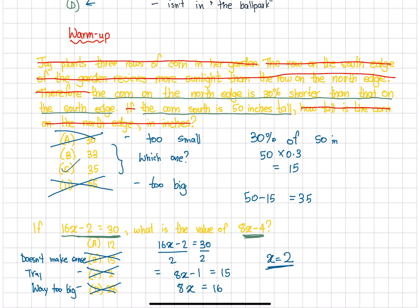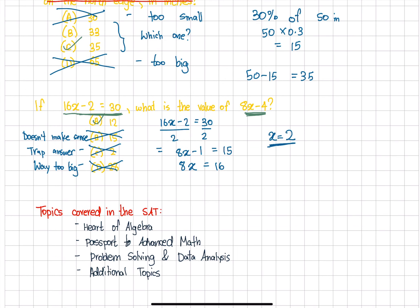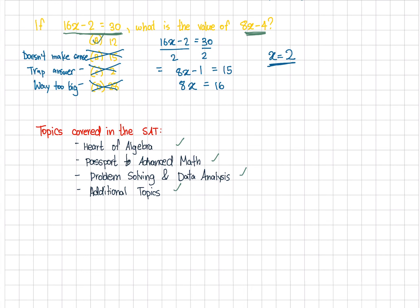Now let's talk about what topics are being covered in the SAT. There are four topics: the heart of algebra, passport to advanced math, problem solving and data analysis, and additional topics. These are just some cleverly named categories, but in real life what's going to be tested is algebra 1 and 2.